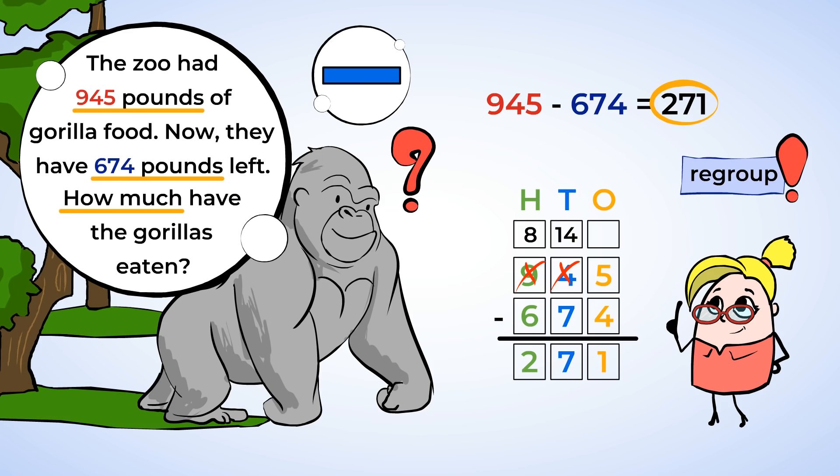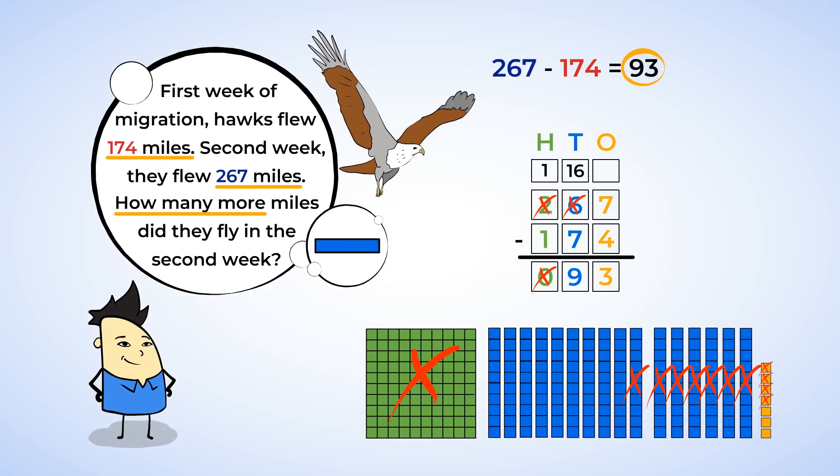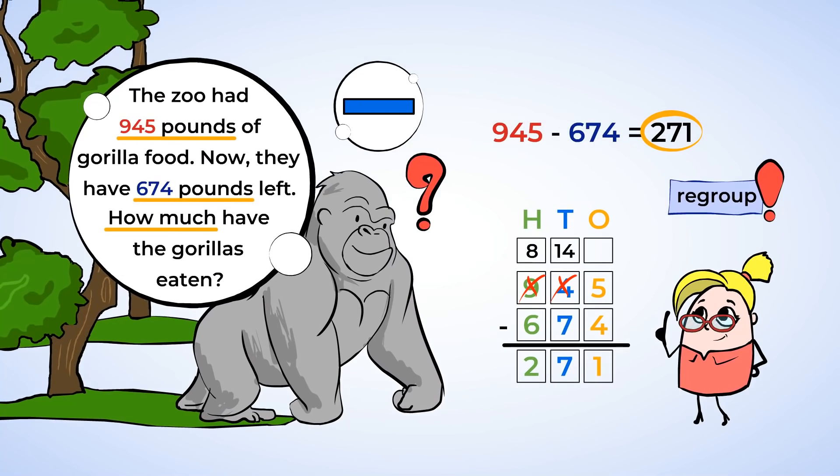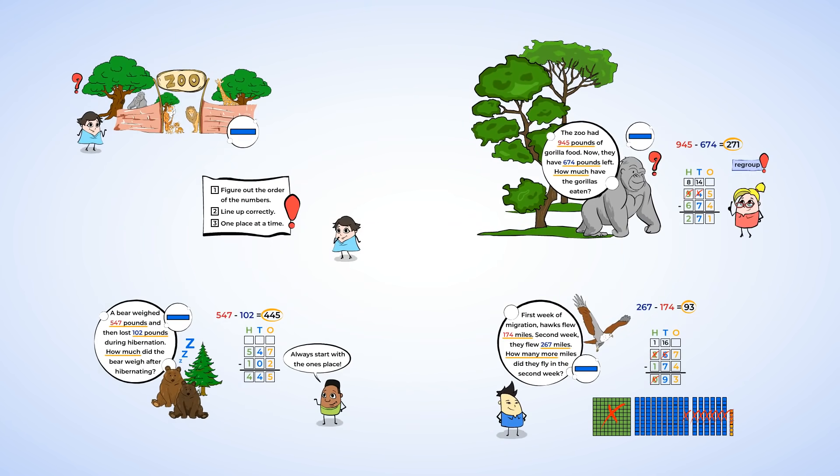Great job today! You learned to use your knowledge of place value to solve 3-digit subtraction problems. We used base 10 blocks and place value charts as our tools and made sure to keep our work organized. And you learned how to regroup 100 into tens when you didn't have enough tens to subtract. Remember, you have lots of different tools you can use, and you get to choose what will help you the most for each problem. See you soon, mighty math friends!